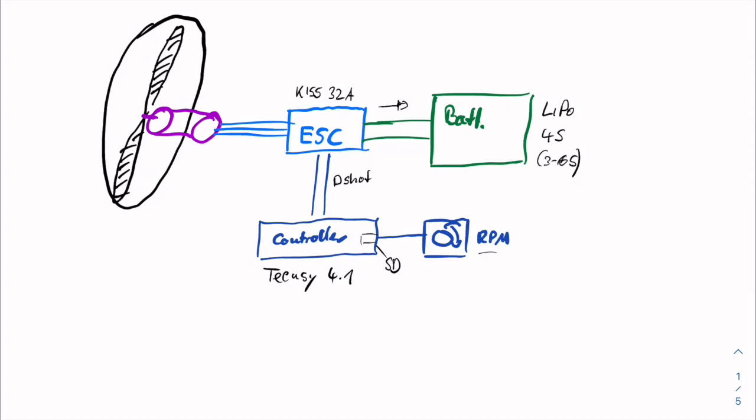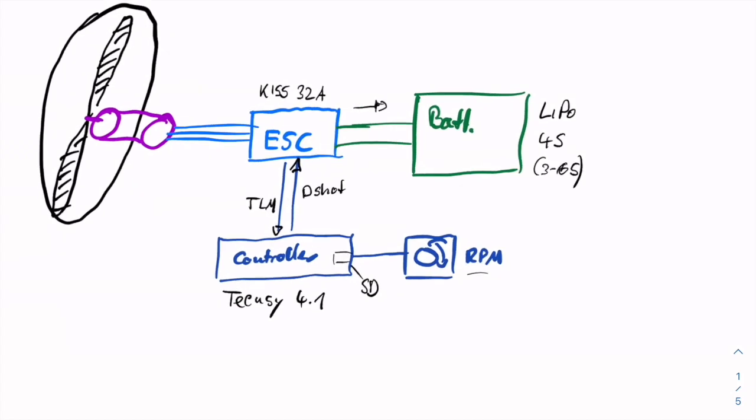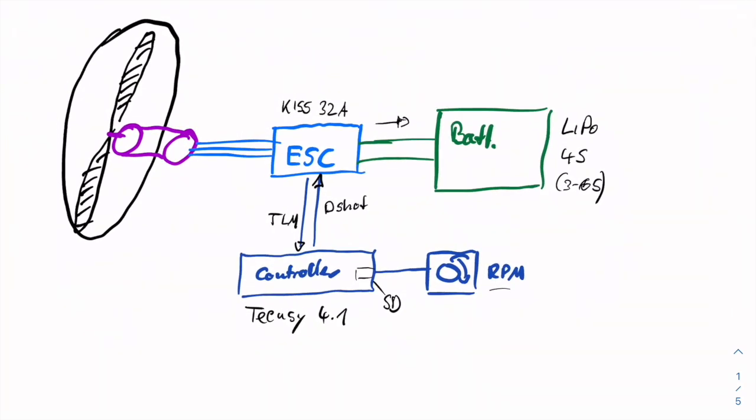With a protocol called DSHOT. This is kind of advanced digital format to control this ESC. And we can both control it and we can receive telemetry here, which is very helpful. So we can log all the current and so on. Actually, the current we can't log because this ESC can only deal with positive currents anyways.